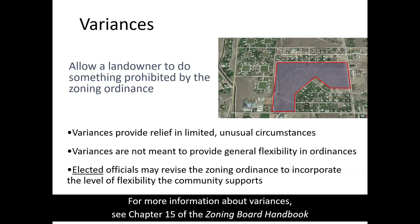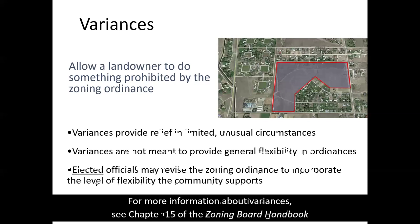Variances are probably the most common decision made by zoning boards. Some zoning boards also decide on conditional uses, but all zoning boards decide on variances. Variances allow a landowner to do something that the zoning ordinance prohibits. They can be used to provide relief in limited and unusual circumstances, but variances aren't meant to provide general flexibility — they're not meant to give people everything they might want. There's a balance between what's good for the community and what's good for a given landowner.